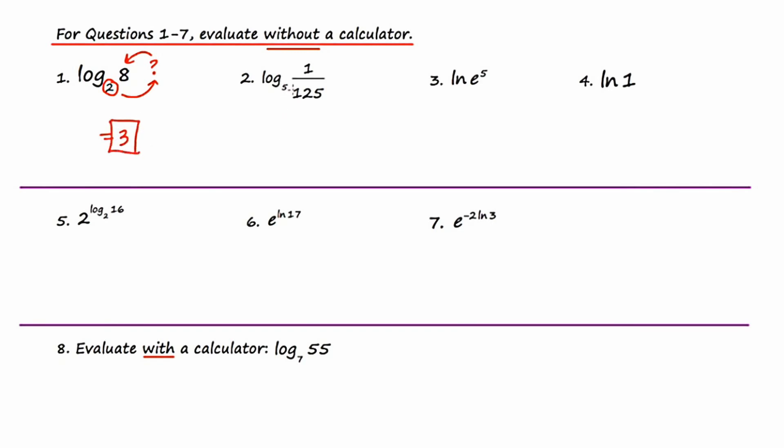Let's go to number two, and we'll schwing again. Five to some power equals one over one hundred and twenty-fifth. So five to some power is equal to one over one twenty-five. Well, five cubed equals one hundred and twenty-five, but we want one over one hundred and twenty-five. So it's going to be negative three in this case. The answer is negative three.